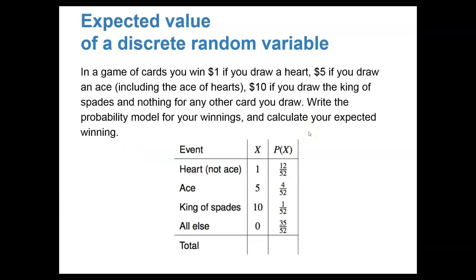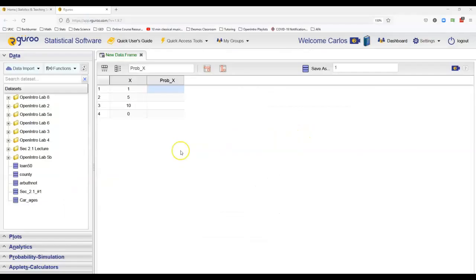So using this probability distribution table, namely the columns labeled x and p of x, we are now going to go to our guru and see how we would use that to find the expected value, the expected winnings in this case for the game. At the same time, I'll also show how to find the standard deviation for this probability distribution. Let's now see how we would use our guru to find the expected winnings for the probability distribution that we just discussed.